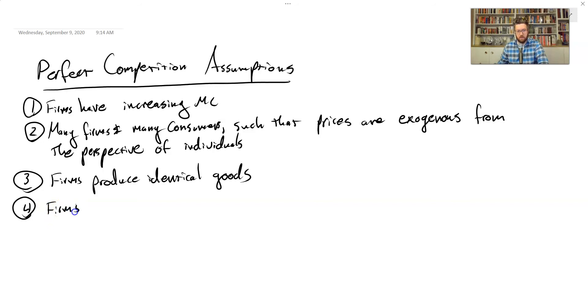Four, firms and consumers have identical information. So what does that mean? There's not side dealing, there's not different prices for different people, and so on.